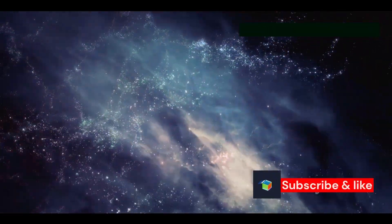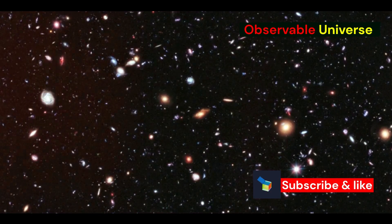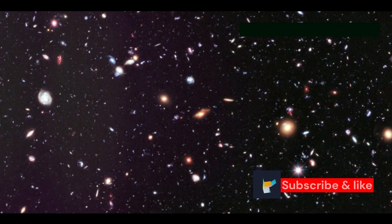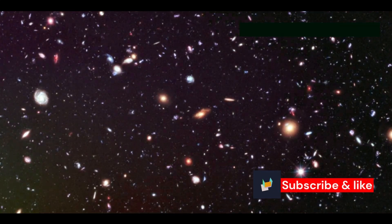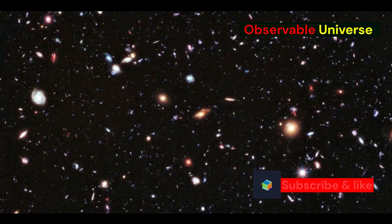Imagine a vast ocean and we are on a small island in the middle. We can only see as far as the horizon. This, in simple terms, is the observable universe. It's our cosmic bubble, the region of space from which light has had enough time to reach us since the Big Bang.